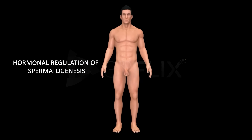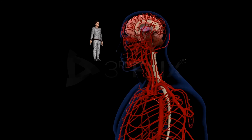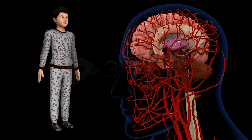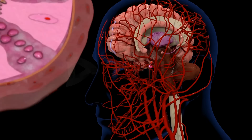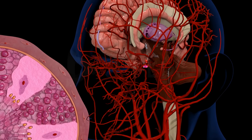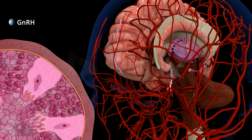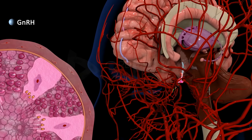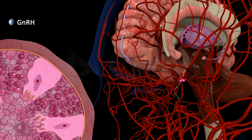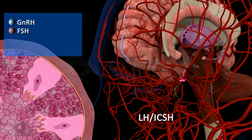Hormonal regulation of spermatogenesis: The process of spermatogenesis is initiated at puberty due to the significant increase in the secretion of the gonadotropin releasing hormone, GnRH, by the hypothalamus. The increased levels of GnRH stimulate the anterior lobe of the pituitary, which secretes two gonadotropins acting on the testes: the follicle stimulating hormone, FSH, and the luteinizing hormone, LH.